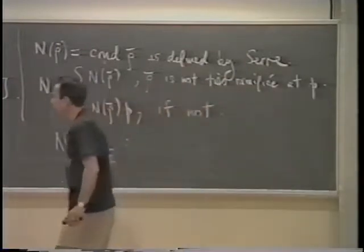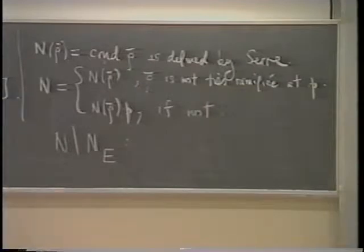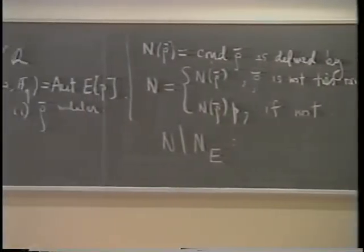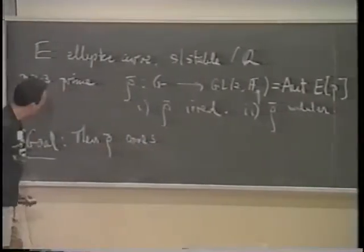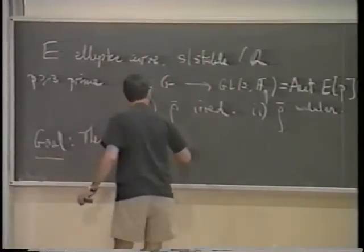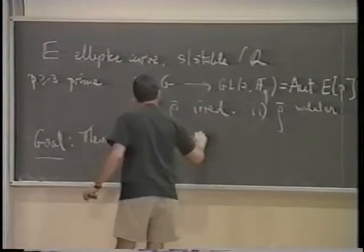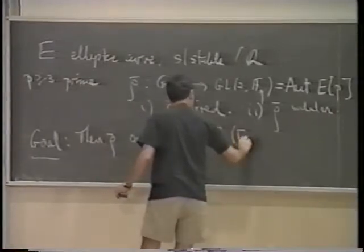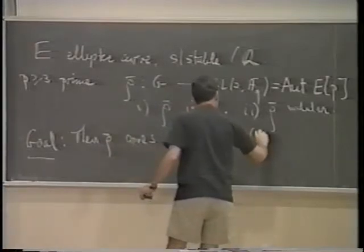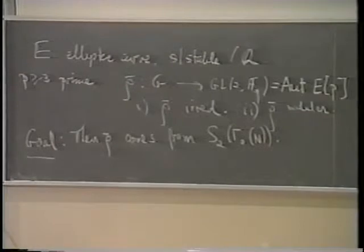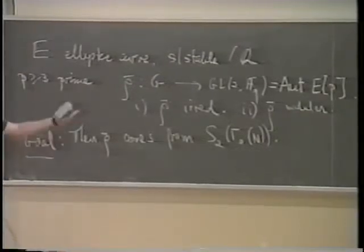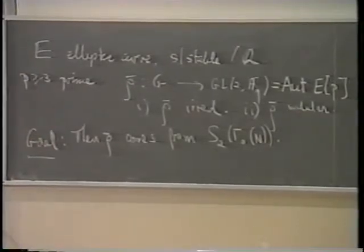The goal is to show that ρ̄ is modular in a very restricted sense — specifically, that ρ̄ arises from the space of weight-2 forms on Γ₀(N). In other words, ρ̄ comes from a modular form of the type you would expect just by thinking about ρ̄.